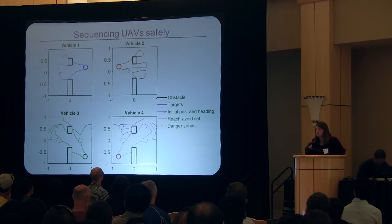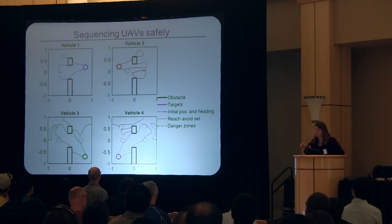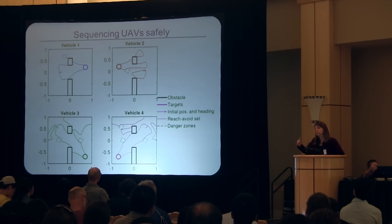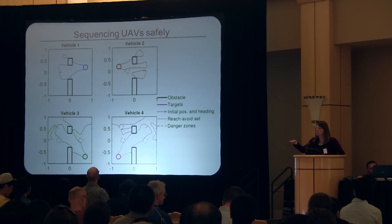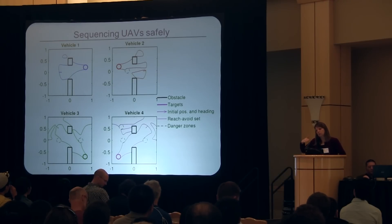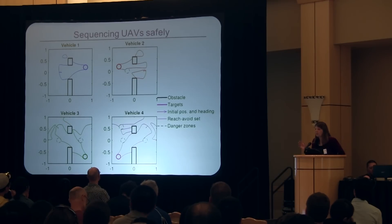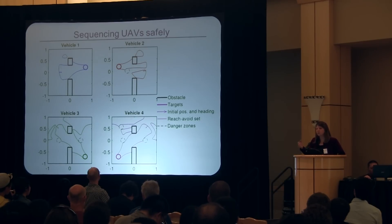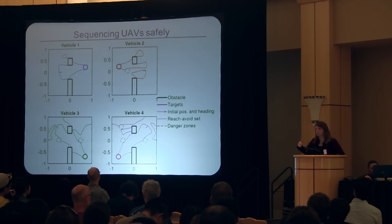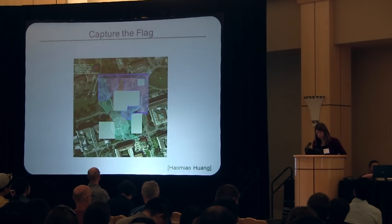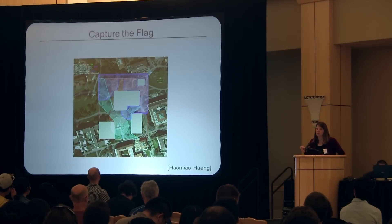The sets can also look quite complicated. This is a sequencing problem of flying UAVs on collision-free trajectories with priorities set: the first vehicle has priority, its trajectory provides a time-varying constraint for the next vehicle, and those provide time-varying constraints to the next, and so on. By the time you get to vehicle four, you can get quite funny-shaped reachable sets, which represent the set of states from which you can reach your original trajectory while avoiding conflict with obstacles and anyone earlier in the hierarchy.